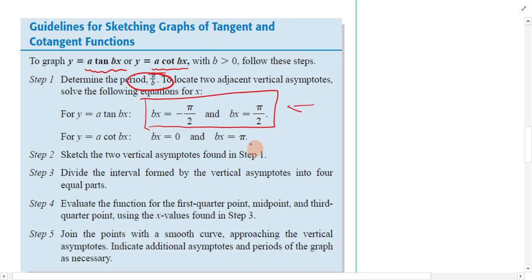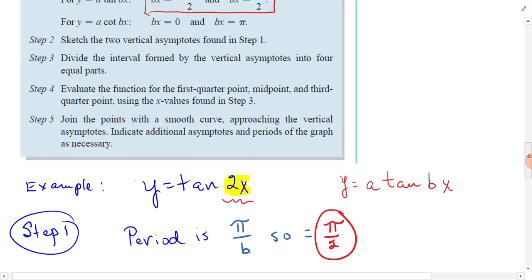Then you're going to set bx equal to negative pi over 2 and bx equal to pi over 2 and solve those. That will give you two vertical asymptotes. Then divide the interval formed by the asymptotes into four equal parts.